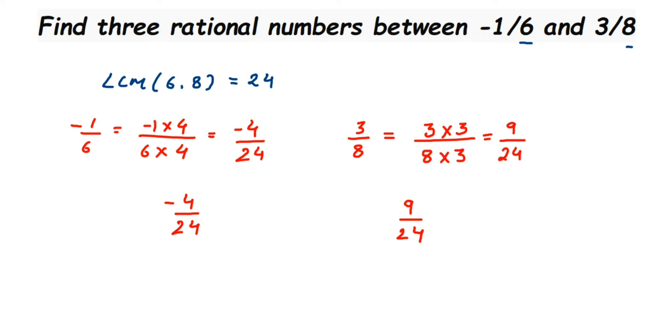Now you can see that between minus 4 and 9 we have many numbers like we have minus 3, minus 2, minus 1, then 0, 1, 2, so on up to 8. So out of these numbers we can pick any 3 rational numbers and we can write down.